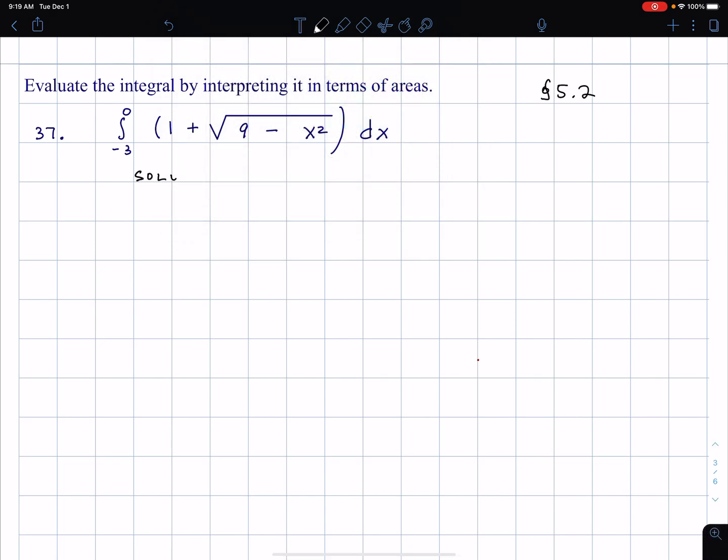And what I'm going to do is start off with this function. So here's the solution. I'm going to start by examining this function f of x equals 1 plus the square root of 9 minus x squared. And I'm going to focus on, for a moment, this part, the second term, radical 9 minus x squared.